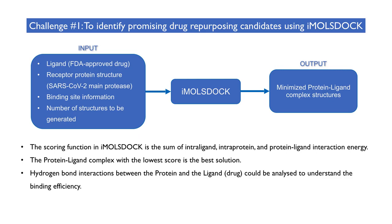The protein-ligand complex with the lowest score is considered the best solution. We can also analyze the binding of the ligand to the receptor protein by checking the hydrogen bond interactions between the protein and the ligand.